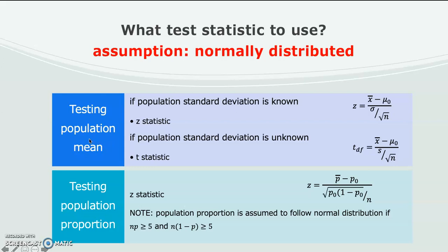There are two types of hypothesis that we test: either testing the mean or testing the proportion. If we are testing hypothesis concerning mean value, then there are two statistic tests that we can use. The first is the Z test and the second is the T test.